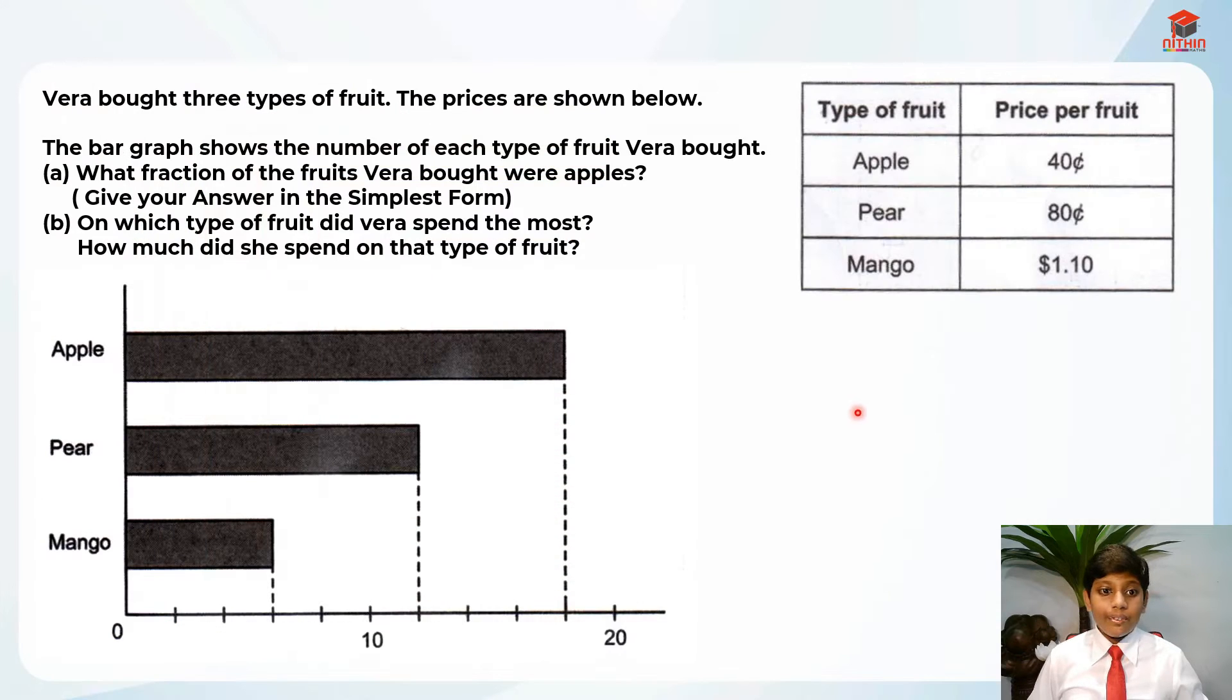This is Question 6 and this question is testing us on graph and comparison. Let's read the question for Part A first. Vera bought 3 types of fruit. The prices are shown below. The bar graph shows the number of each type of fruit Vera bought. Part A: What fraction of the fruits Vera bought were apples? Give your answer in the simplest form.